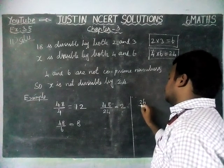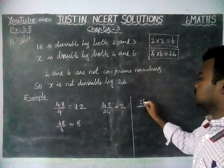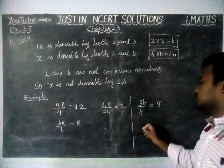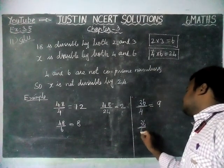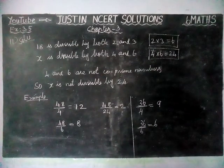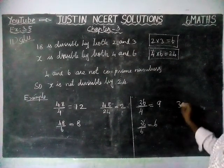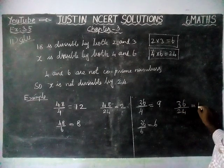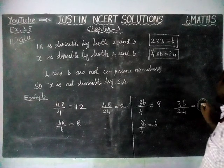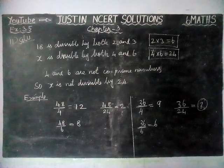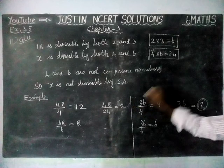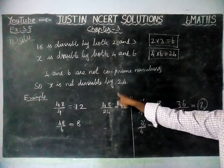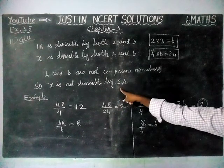Second case: Take the number 36. 36 is divisible by 4, since 9 × 4 = 36. 36 is also divisible by 6, since 6 × 6 = 36. Now checking: 36 ÷ 24 gives 1 point something — we cannot get a whole number. So 36 is not divisible by 24. Therefore, it may be divisible in some cases, but we cannot say that it must be divisible by 24.